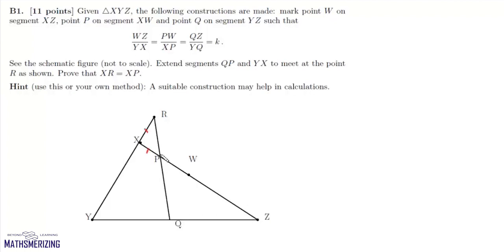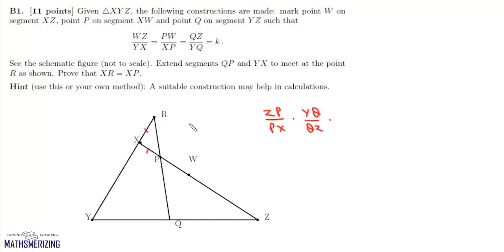For this question we'll use the unsigned version of Menelaus' theorem. In triangle XYZ we take line RPQ as a transversal, and we can write: ZP upon PX times YQ upon QZ times XR upon YR equals 1.